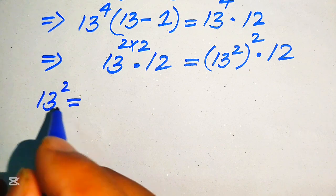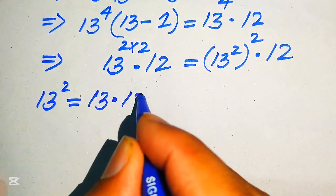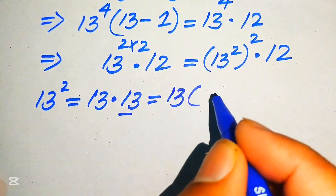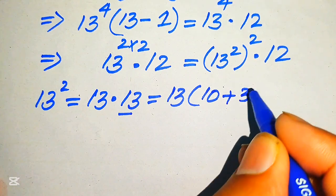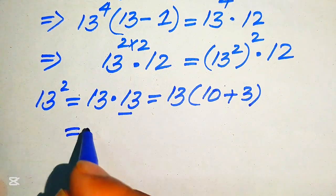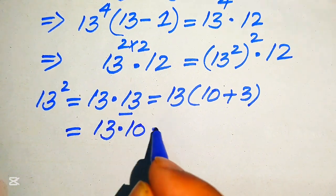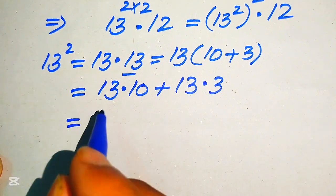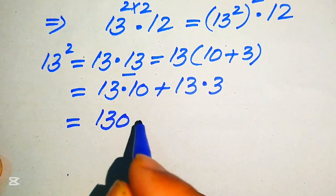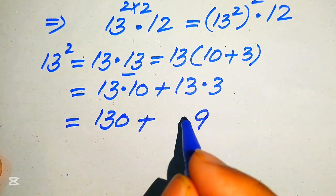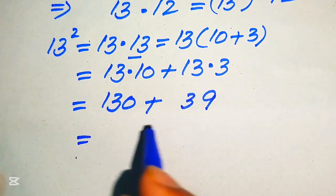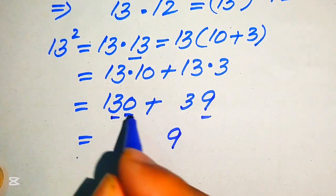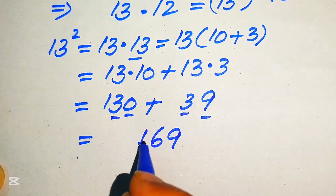13 squared means we multiply 13 by 13. We break 13 as 10 plus 3 and separately multiply 13 on both values: 13 multiplied by 10 plus 13 multiplied by 3, giving 130 plus 39. Adding these gives 169. So 13 squared equals 169.